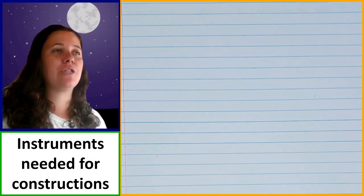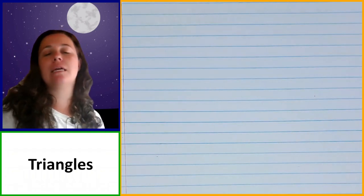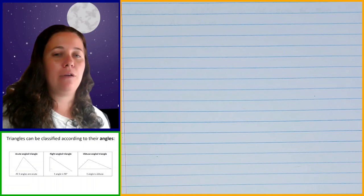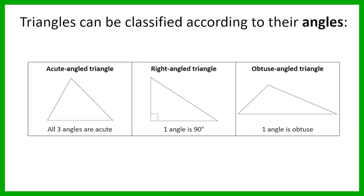So now let's quickly have a look at different types of triangles. We can classify them based on their angles. You get three types of triangles. The first one is the acute angle triangle, where all three angles are acute — that means every angle is less than 90 degrees. Then we've got our right angle triangle, where we have one angle that is 90 degrees and the other two will be acute. And then we've got our obtuse angle triangle, where one angle is obtuse and the other two are acute.